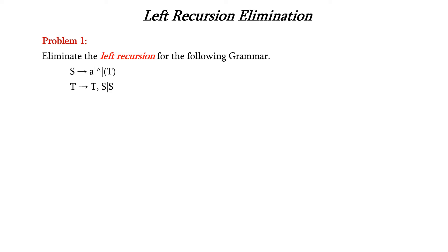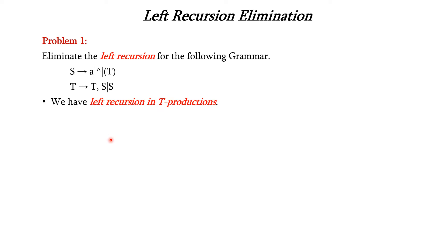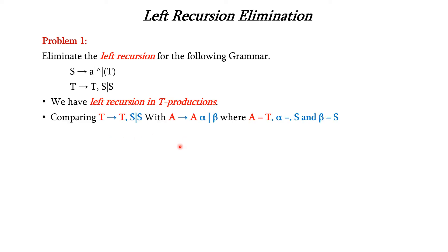Let us take examples. In the first problem, we have two productions. The first production does not have left recursion because the left side is S and the right side starts with A. In the second production, we have left recursion because the left side is T and the first position on the right side is also T. So we have left recursion in the T production.